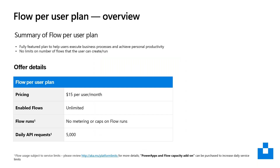For the Flow Per User Plan, it's $15 per user per month. You get unlimited flows with no metering or caps on flow runs as there was previously. There's a daily API request limit of 5,000, and you can purchase additional API requests as stated previously.